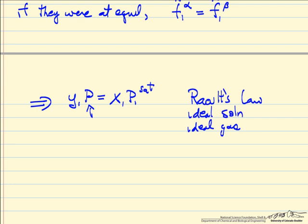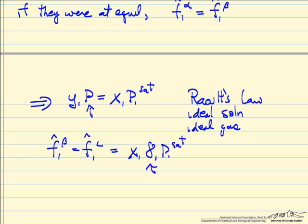If we don't have an ideal liquid solution — in other words, the interactions between components differ from a simple average interaction, which is reasonably common — then the fugacity of component one in the beta liquid phase would be x₁ times γ₁ times P₁_sat. This gamma is the activity coefficient; it corrects for the fact that we don't have an ideal solution, and we need information about the interactions to calculate it.